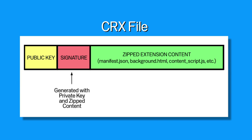When installing a CRX, Google Chrome extracts the public key, signature, and zipped content, and makes sure the signature is valid using the public key. What this means is that once users have installed a particular extension, they can get updates to it and be sure that the new versions were signed by the same private key as the original version.